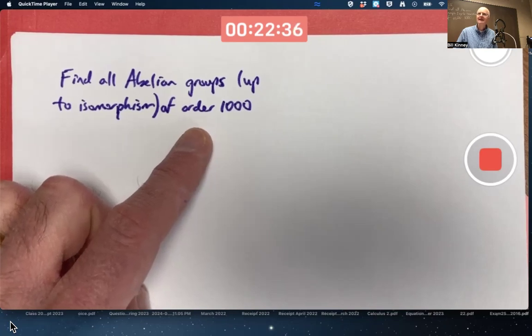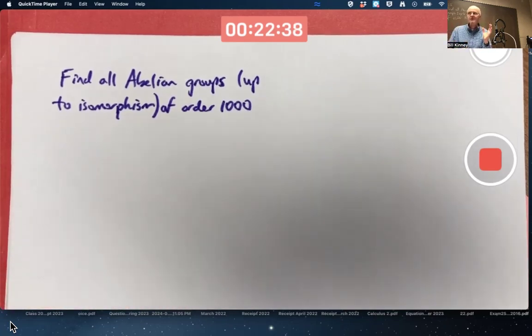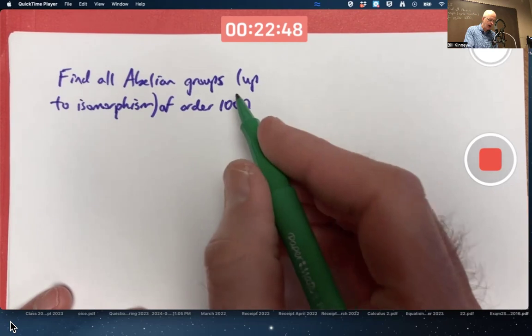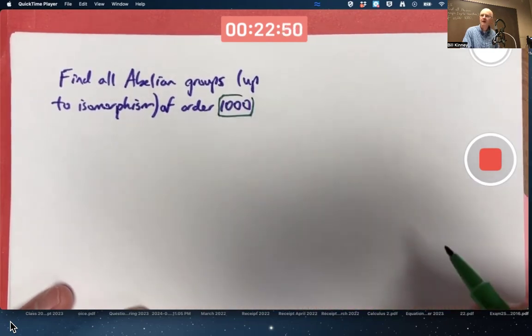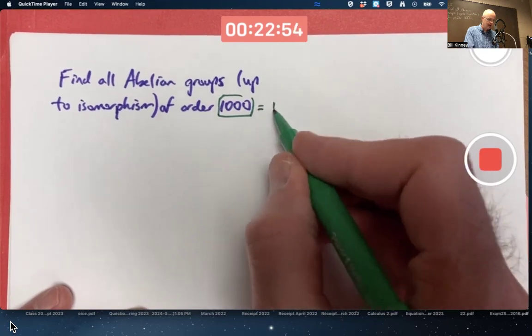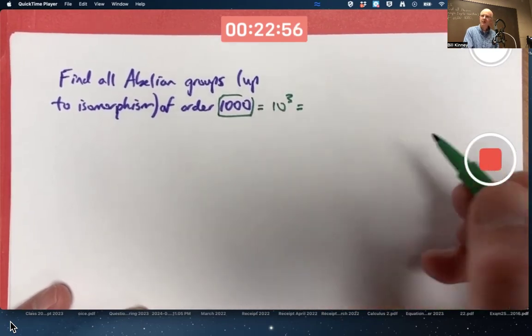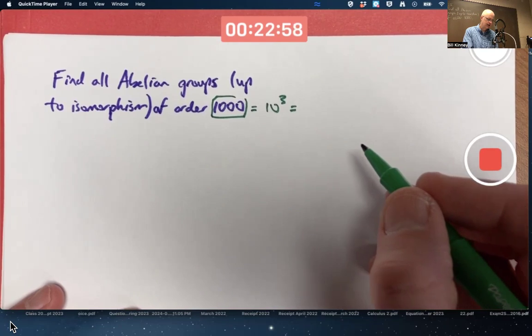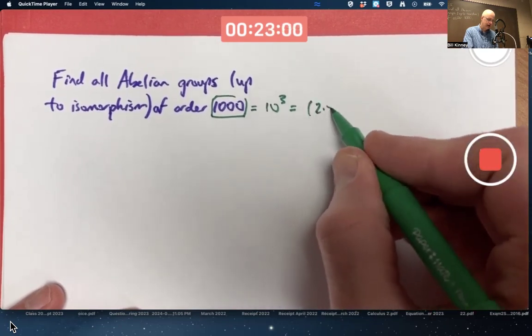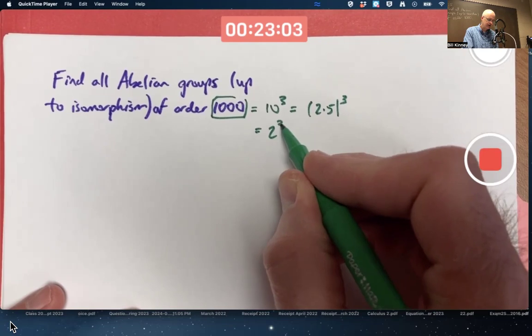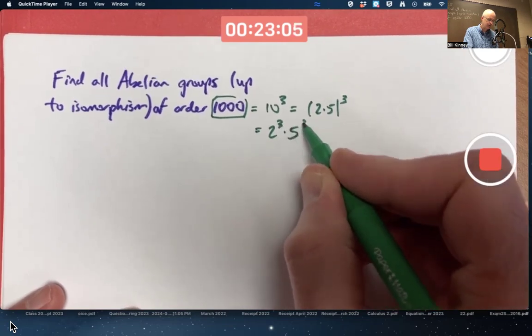Up to isomorphism means any group of order 1,000, any abelian group of order 1,000, is going to be isomorphic to one of these ones that I'm going to write down. What you always want to do in this kind of problem is first of all come up with a prime factorization of the order of the abelian group. 1,000 is 10 cubed, but 10 is not prime, so we're not done with the prime factorization. 10 is 2 times 5.